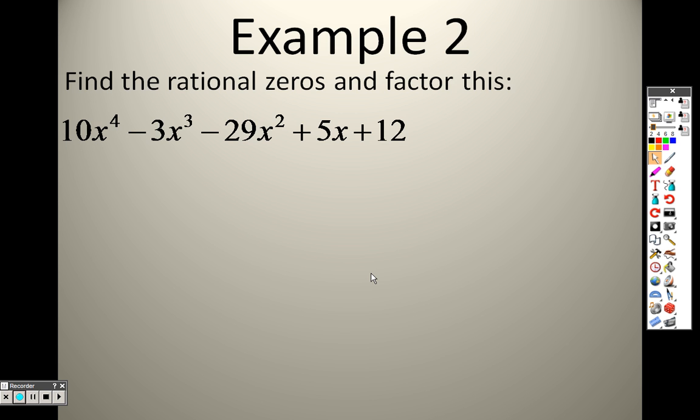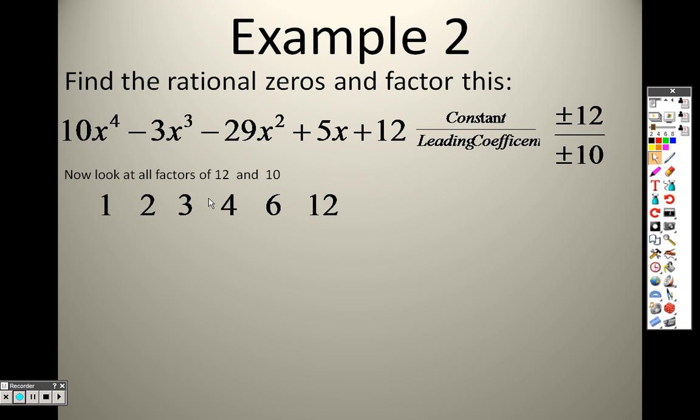So example 2. This is a nice, big, huge, long one. So when I'm doing this, I know that I have a 12. So according to our theorem, I take the constant over the leading coefficient, that's a positive or negative 12 divided by a positive or negative 10. So I need to list all my factors. All my factors of 12: 1, 2, 3, 4, 6, 12. The last one, we had a 1 on the bottom. No biggie. Now I have a 10 on the bottom. All the factors of 10: 1, 2, 5, and 10. You know what that means? I have a ridiculous amount of these to choose.